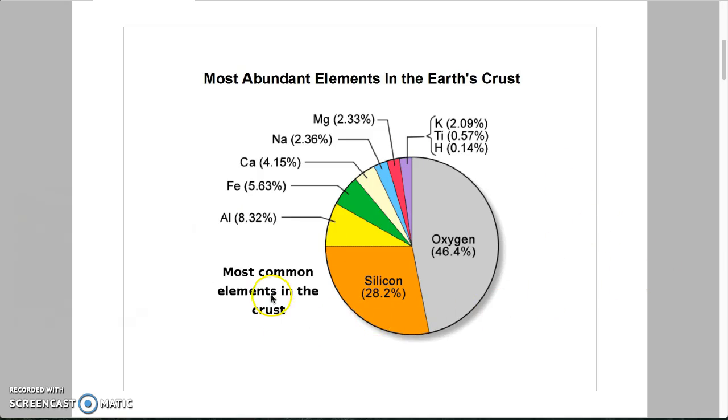Here on the diagram you can see some elements, for example, oxygen, silicon, aluminum, iron, calcium, etc. And you can see that oxygen with 46.4% stands in the first place.